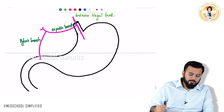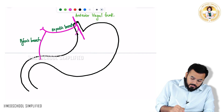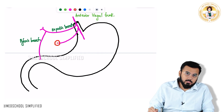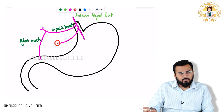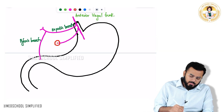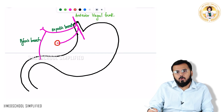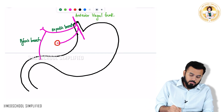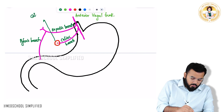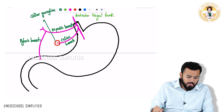From the anterior vagal trunk, another branch goes straight into a ganglion called the celiac ganglion — just as you have the celiac trunk, there is also a celiac ganglion. This branch entering the celiac ganglion is called the celiac branch.